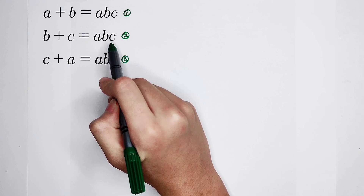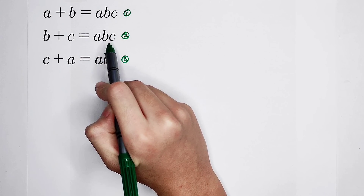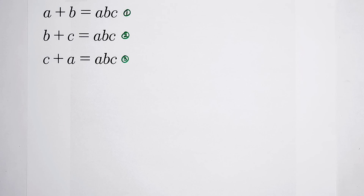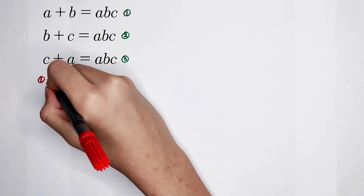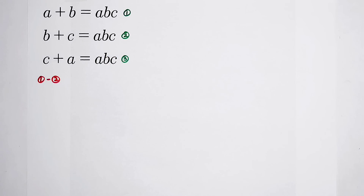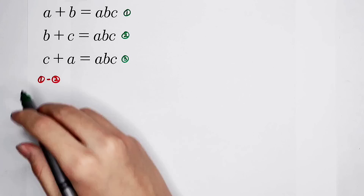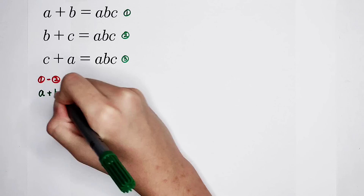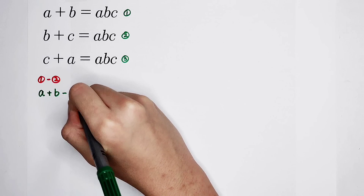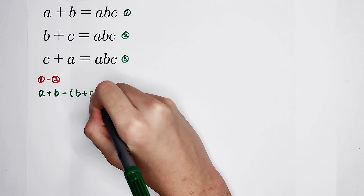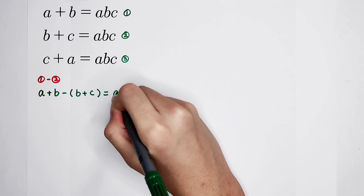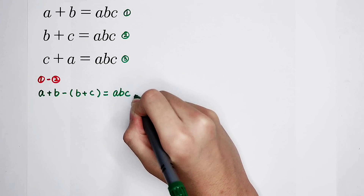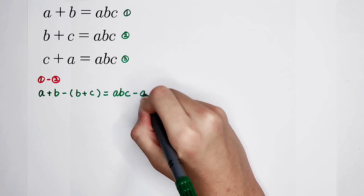The right-hand sides have the same value, ABC. First, we can subtract the first equation from the second equation. The left-hand side becomes A plus B minus bracket B plus C, and the right-hand side becomes ABC minus ABC.